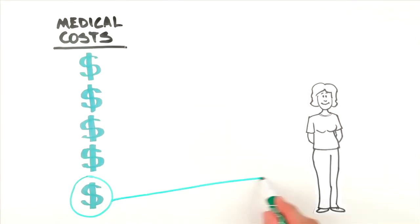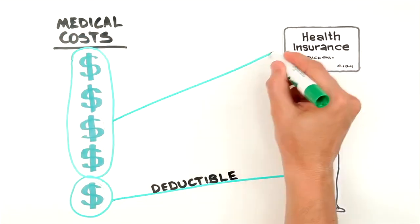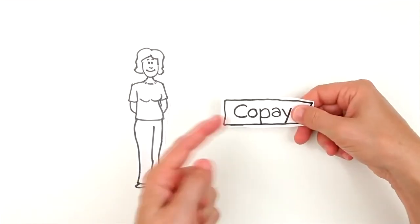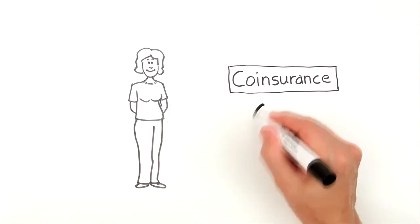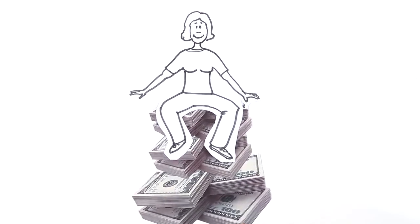So to sum it up, deductibles are the portion you must pay first before your insurance pays its share. Then you pay only a small portion of your health care costs, either a set co-pay amount or a co-insurance percentage. Maximum out-of-pocket is the most you will pay for covered treatment in one year.